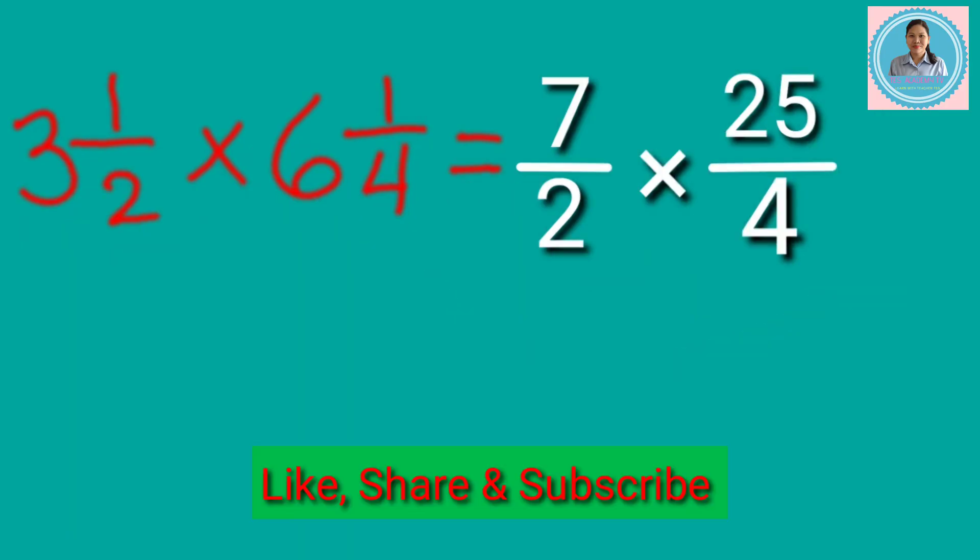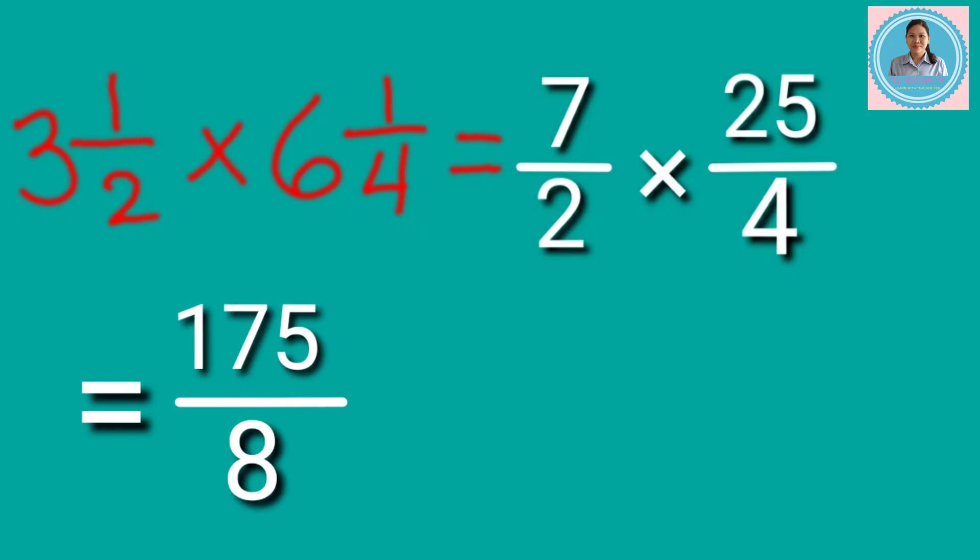Now, let's multiply the numerators and multiply also the denominators. 7 × 25 equals 175. 2 × 4 equals 8. The answer is 175 over 8.